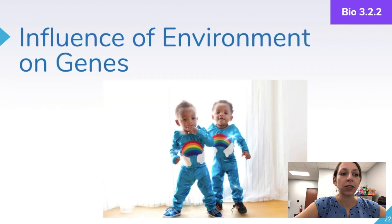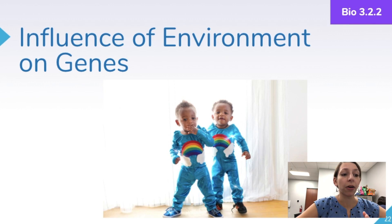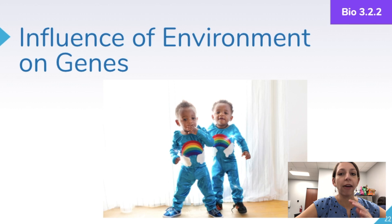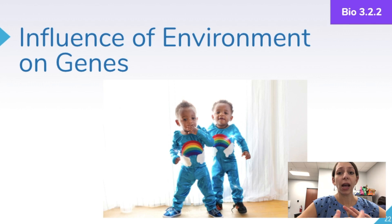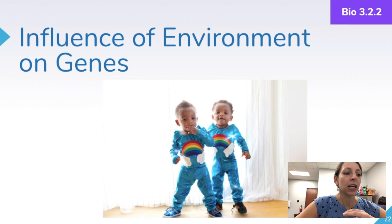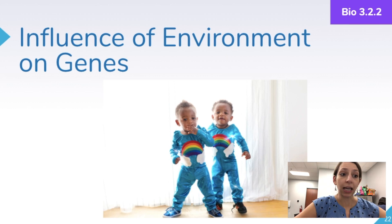Another thing to review is the influence of environment on genes. For example, if identical twin girls are separated at birth and raised by two different families in different environments, after many years they could have different heights and weights. The cause of these differences is that they likely had different diets, different environmental exposures, and different physical activities. The environment does play a role in influencing traits, so even identical twins won't be exactly the same because their genes will be expressed in different ways.